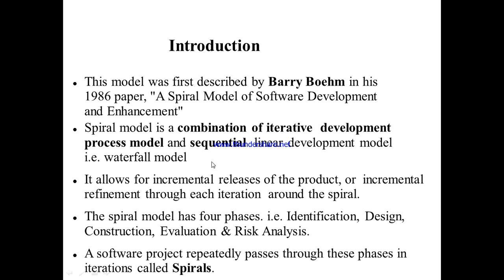The spiral model is a combination of the iterative development process model and the sequential linear development model — that is, the waterfall model. It combines the systematic approach of the waterfall model with the incremental and prototyping iterative model.